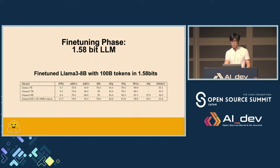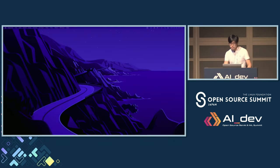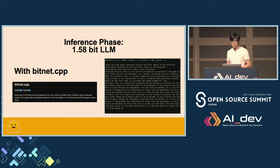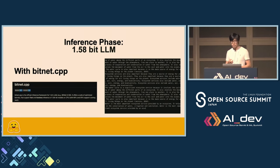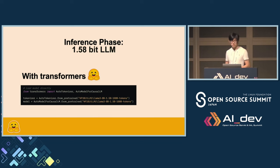To run these 1.58-bit LLMs, there are two choices. A few weeks ago, Microsoft released the bitnet.cpp project — the official inference engine. What's nice about this engine is that the speed is very fast on CPU and on Mac, demonstrated with the 3 billion model running on a MacBook. The other solution is using Transformers — you just pass the model name to create the model and tokenizer using the from_pretrained method.